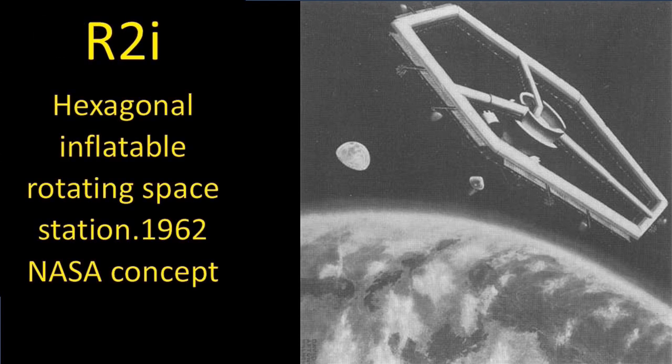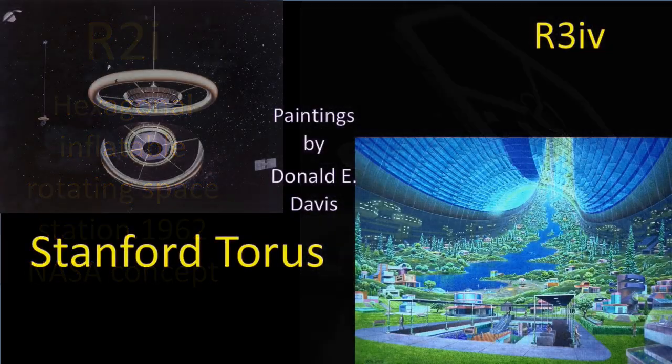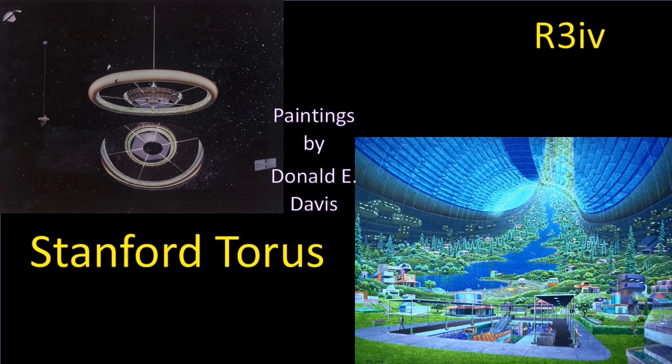NASA did quite a few of these kind of mock-ups in late 50s and early 60s. This is a hexagonal rotating one designed to be inflated from the early 60s. It wasn't very long before people started envisioning much larger places, places where people would actually live as opposed to tight, confined spaces that you'd find at a place of business, a post in the Antarctic, that sort of thing.